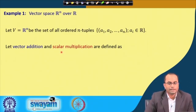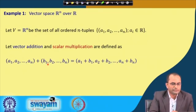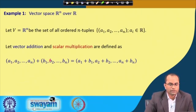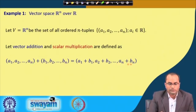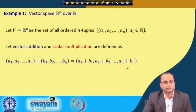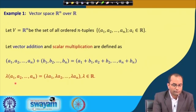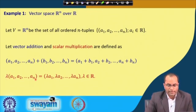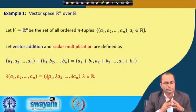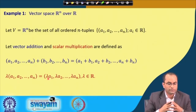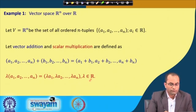Vector addition and scalar multiplication are defined as usual. When we take two elements (a1, a2, ..., an) and (b1, b2, ..., bn) and add them, the new element is just component-wise addition: (a1+b1, a2+b2, ..., an+bn). For scalar multiplication, when we multiply by scalar lambda, the new element is (lambda·a1, lambda·a2, ..., lambda·an) for all lambda from R.